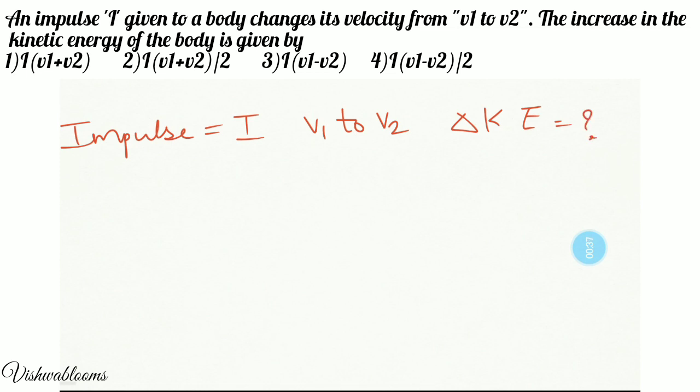First we all know the formula of impulse. Generally impulse is change in momentum, so it is P2 minus P1. So P2 is MV minus MU which is simply M into V minus U, mass into final velocity minus initial velocity.